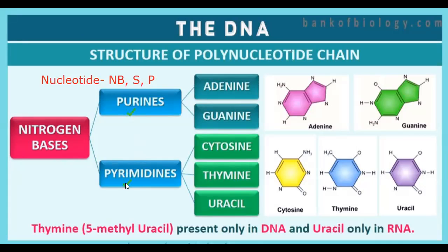We have started a new chapter — Molecular Basis of Inheritance. DNA and RNA, both of our genetic materials, are polynucleotide chains. In the nucleotide structure there are three parts: the nitrogenous bases, the sugar, and the phosphate group. The nitrogenous bases are of two types: purines and pyrimidines. Adenine and guanine are the purines. The pyrimidines are of three types: cytosine, thymine, and uracil.